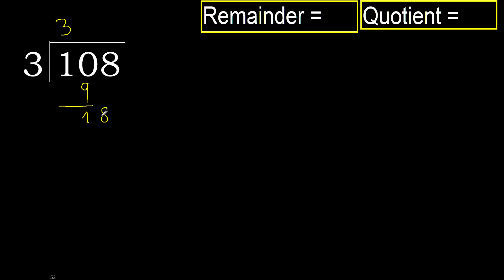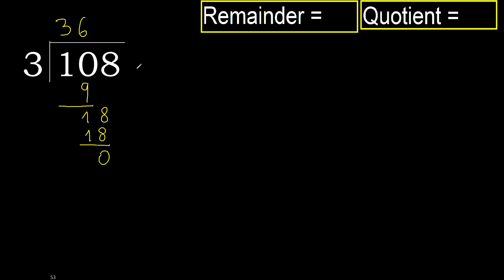Next: 18. 3 multiplied by 6 is 18 — ok, is not greater. Subtract — 0. Next, there is no number, therefore finish it.